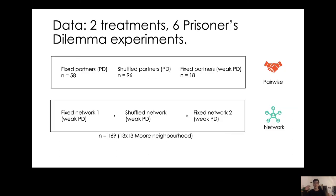We have two treatments: pairwise and network. In pairwise, we have fixed partners and shuffled partners. In the network treatment, we put subjects in a fixed neighborhood, then shuffle the network for several rounds, and then fix them again in a different neighborhood.